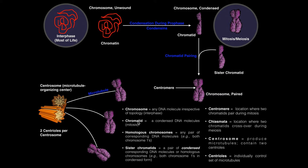To understand how the term chromosome fits in with these other terms for DNA molecules, let's use an analogy of a folding chair. A fold-out chair can exist in two conformations, or what we'll call a topology — that is, a shape. You can either fold it up, which makes it easy to store, or you could unfold it, which allows you to sit in it. Those are two different shapes of the chair, but does it erase the fact that they're both still the same chair?